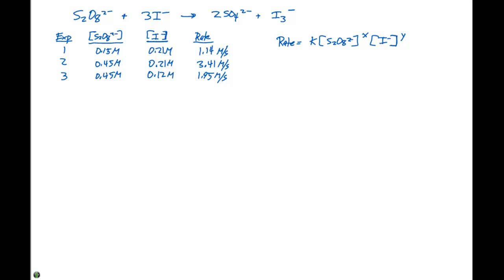In this case we have two reactants, so we have to make sure that both of them are present in our rate law. We can look at our experimental data: when we go to experiments two and three, we keep the concentration of S₂O₈²⁻ constant, and if we look at experiments one and two, we keep the concentration of I⁻ constant.